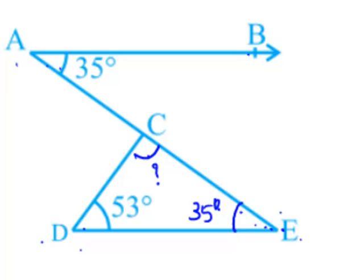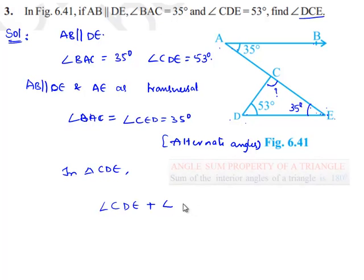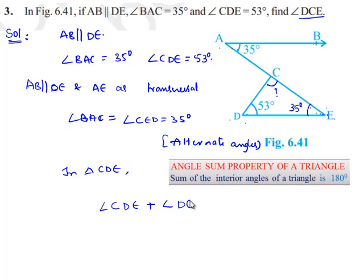Therefore, we can write angle CDE plus angle DEC plus angle DCE equals 180 degrees, which implies 53 degrees plus angle DEC plus angle DCE equals 180 degrees.